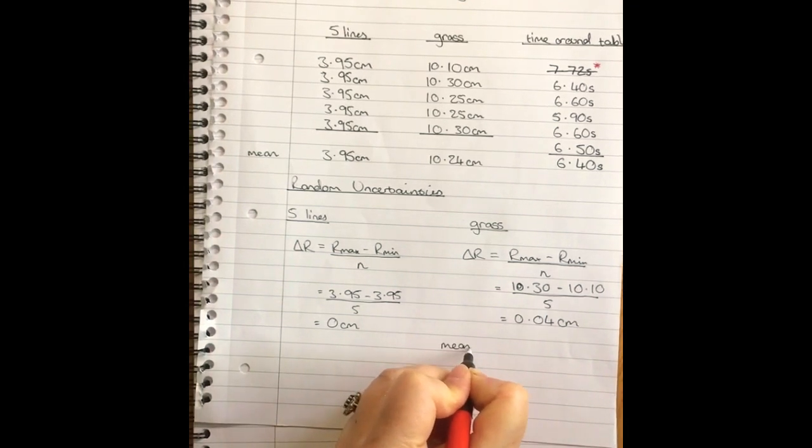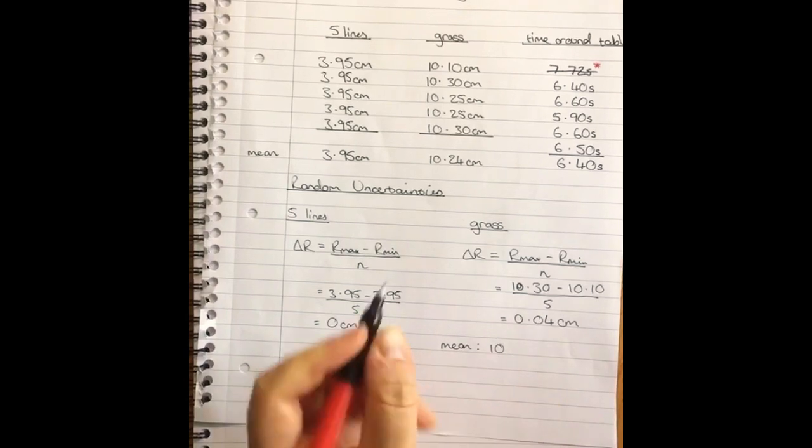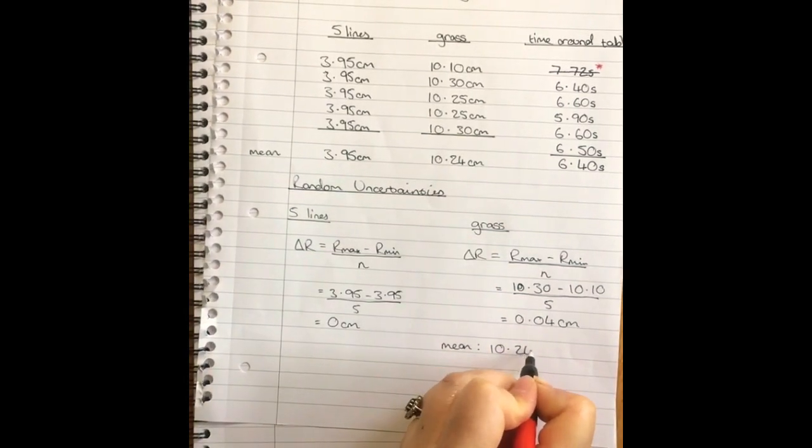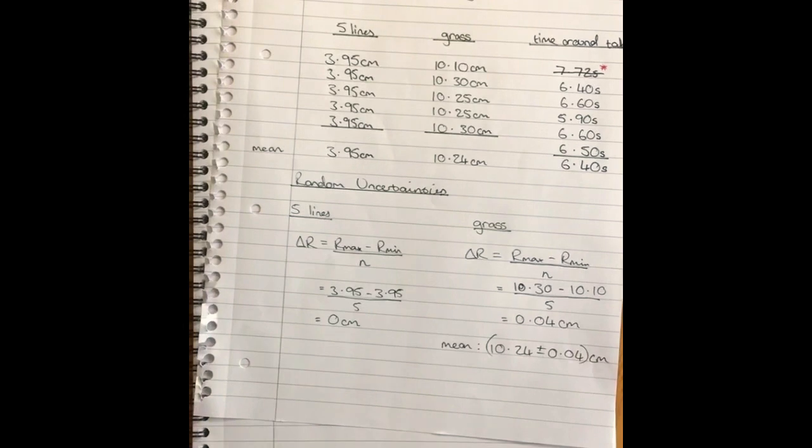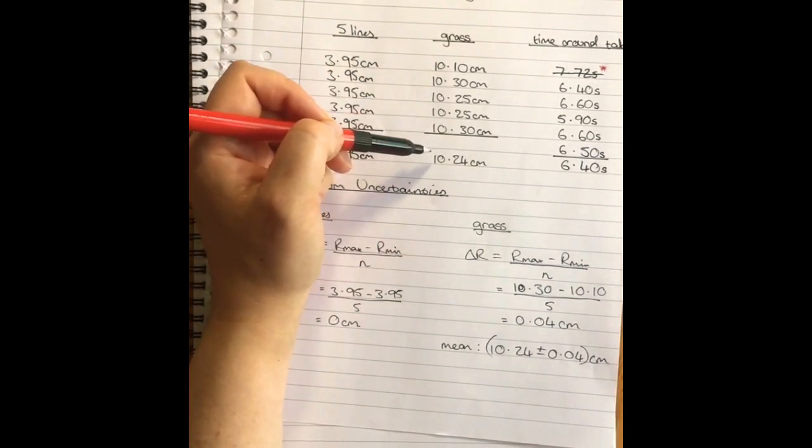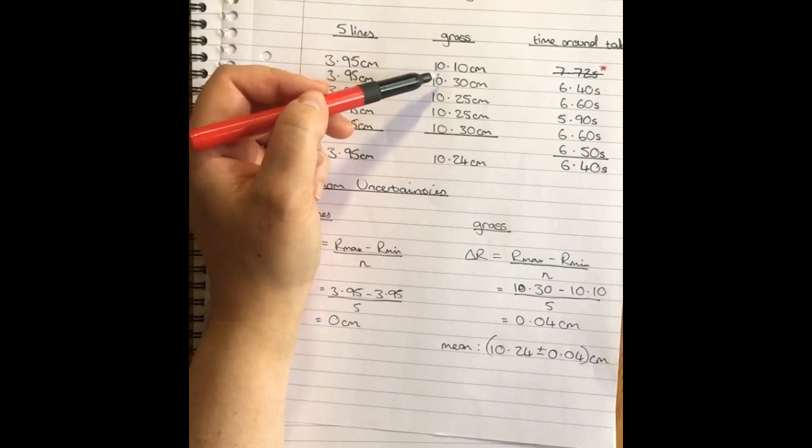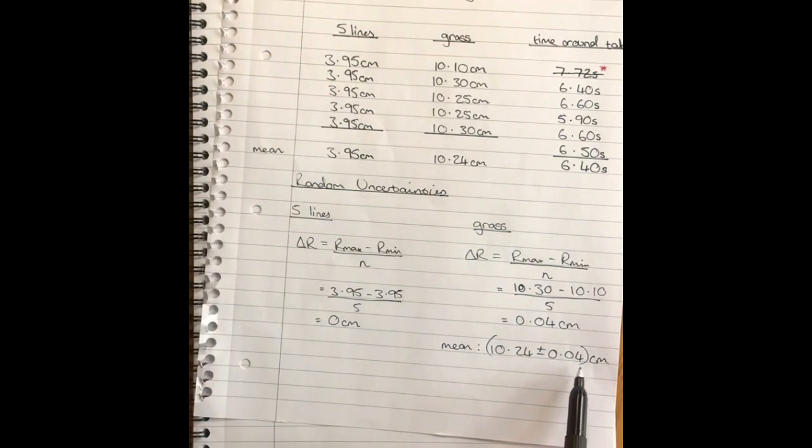So therefore my mean measurement here is 10.24 plus or minus 0.04 centimeters. Your random uncertainty is the uncertainty in your mean. When you calculated a mean how different were the numbers that you calculated it from. So they're all supposed to be the same. If it was a perfect measurement they would all be identical. Because it is not and nothing is perfect really, we get a variation in numbers. So this random uncertainty describes that when I calculated this mean it describes how varied the numbers were that contributed to it.